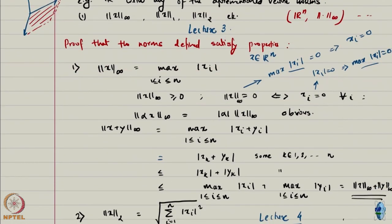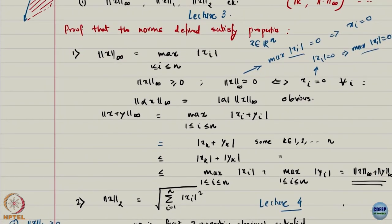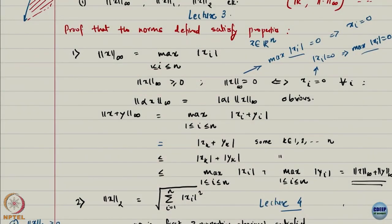We want to do quick proofs of why some of these norms satisfy the norm properties. We are not going to spend too much time on it. Let us look at the infinity norm first. The infinity norm is essentially the max of the absolute value of the elements. Obviously it is non-negative, because we took the absolute value and absolute values are non-negative.